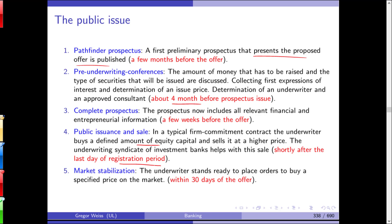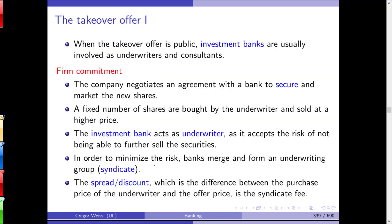The underwriter bears the risk of buying shares that fall in value, but also has the opportunity to profit if the IPO is successful and prices rise. A famous example of a botched IPO is Facebook: the investment banks — reportedly Goldman Sachs — did a poor job, and on the first day of trading the Facebook stock plummeted, requiring market stabilization and causing significant losses.